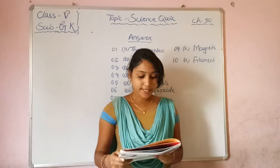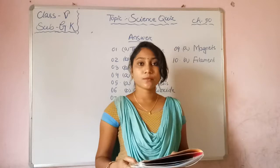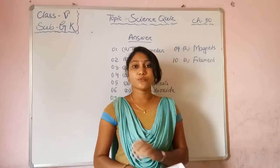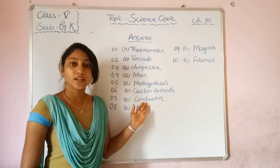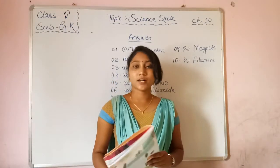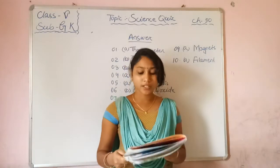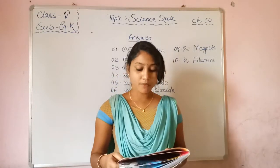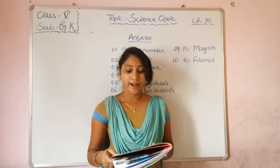Next question: Electricity can pass through? Option A — conductor, Option B — insulator. The correct answer is Option A — conductor. Electricity can pass through a conductor.